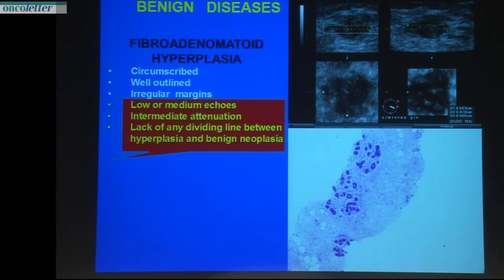Another related lesion is fibroadenoma hyperplasia — a typical proliferative lesion, sometimes with microcalcifications inside. In these cases the lesion may disappear after six, twelve, or even twenty-four months — it can disappear completely. It is a proliferative lesion but it is not necessary to remove it at all.